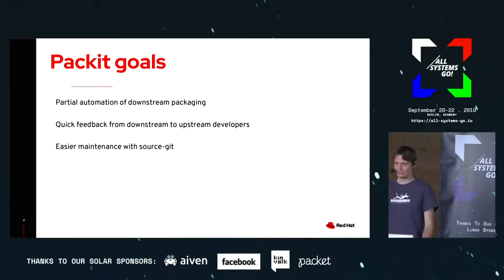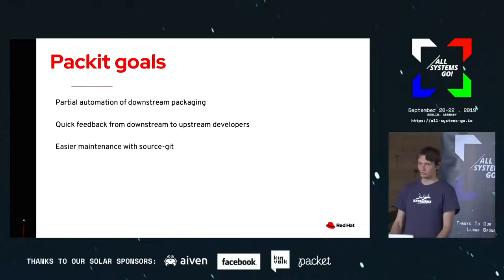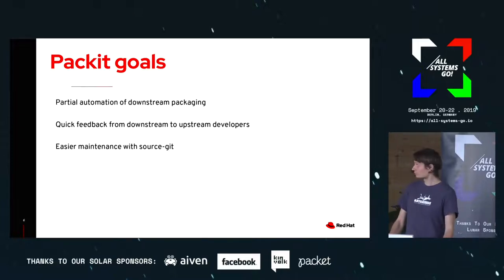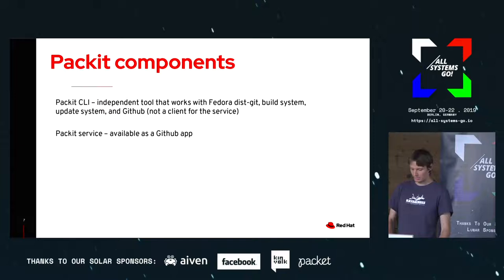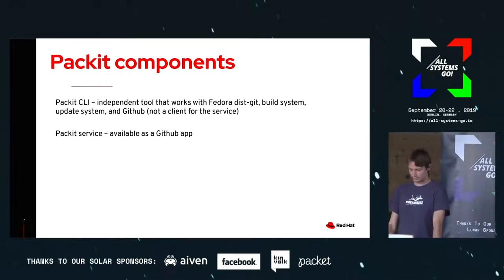That's why we're trying to help with packaging. Packit has these goals: it tries to partially automate the task of packaging software — and I must stress it's only partial help, because it's not possible to completely automate the process. It also tries to create easier interaction between downstream maintainers and upstream developers, and provides an easier way to manage distgit for maintainers with source git.